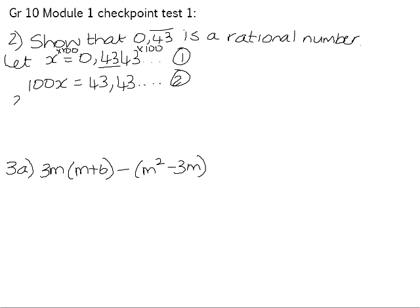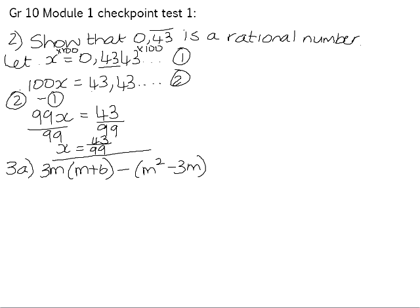If we now subtract the equations from each other, we are left with 99x. 100 minus x is 99x, and 43.43 recurring minus 0.43 recurring is 43. Divide both sides by 99, and we get x is 43 over 99. So 0.43 recurring is 43 over 99. As it is written as a fraction, we have therefore shown it to be a rational number.